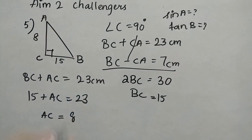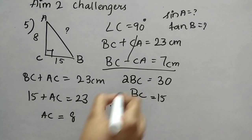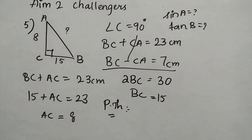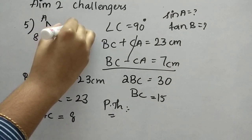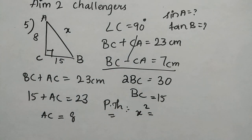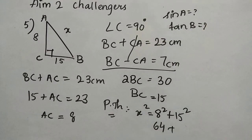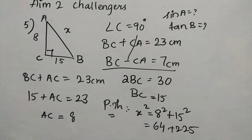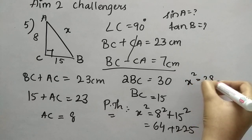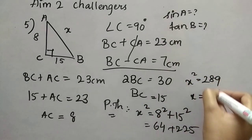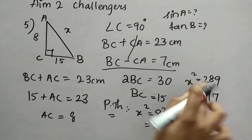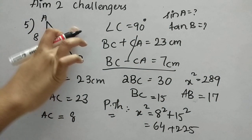Now the remaining side is AB, the hypotenuse, which we find using the Pythagorean theorem. Let AB equal X. Then X squared equals 8 squared plus 15 squared, which is 64 plus 225 equals 289. So X equals the square root of 289, which is 17. Therefore AB equals 17.